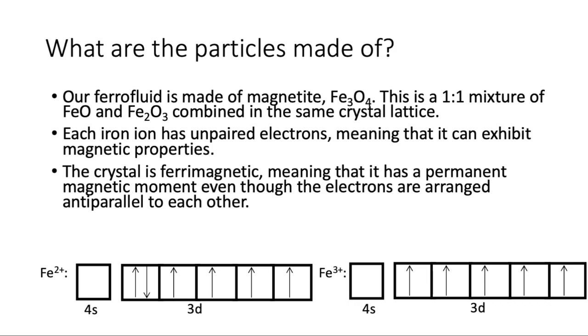So we've got the electron orbital diagrams for iron 2 ions and iron 3 ions here at the bottom. And you can see that they both have unpaired electrons. And in the crystal of magnetite, if the iron 2 plus ions had all of their electrons pointing up, then the iron 3 plus ions would have all of their electrons pointing down. So they're arranged anti-parallel to each other. But because they have an uneven number of unpaired electrons, even when they're anti-parallel to each other, there would be a net one unpaired electron in one direction.